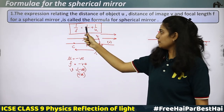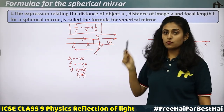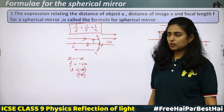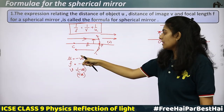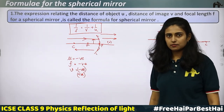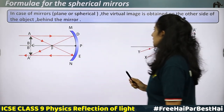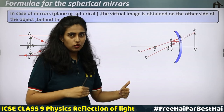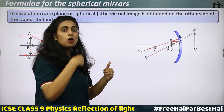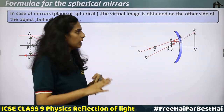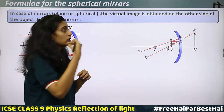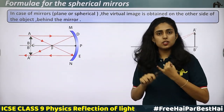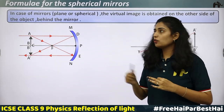When using the mirror formula 1/f = 1/v + 1/u, substitute negative values where required depending on the type of mirror. Note: for mirrors, virtual images are obtained on the other side of the object — behind the mirror. In case of a plane mirror, the image is always behind the mirror. A concave mirror can form both real and virtual images, while a convex or plane mirror always forms virtual images. Virtual images cannot be obtained on a screen.